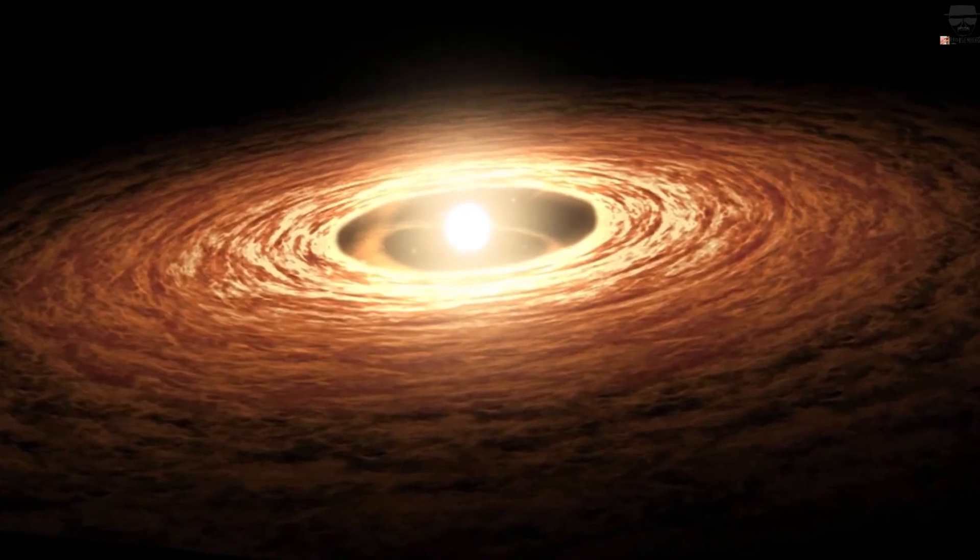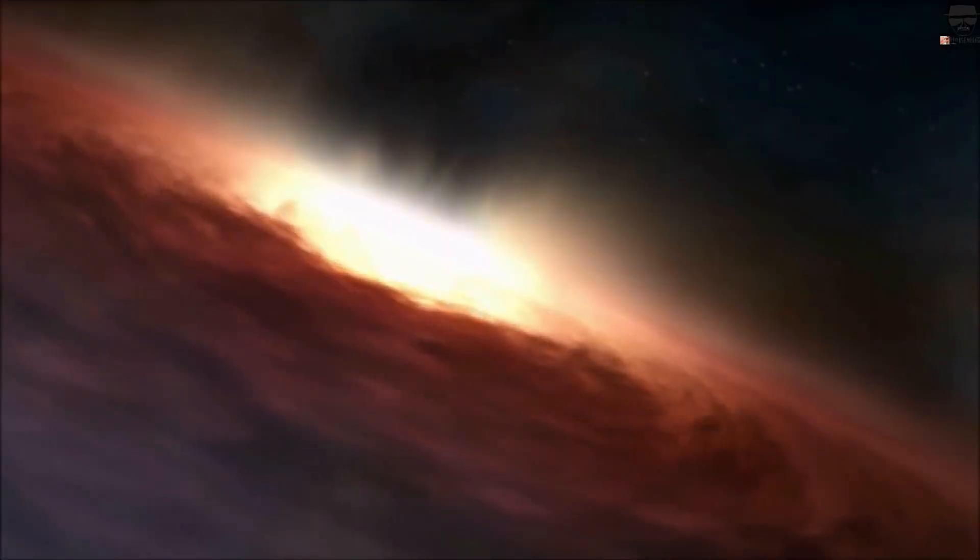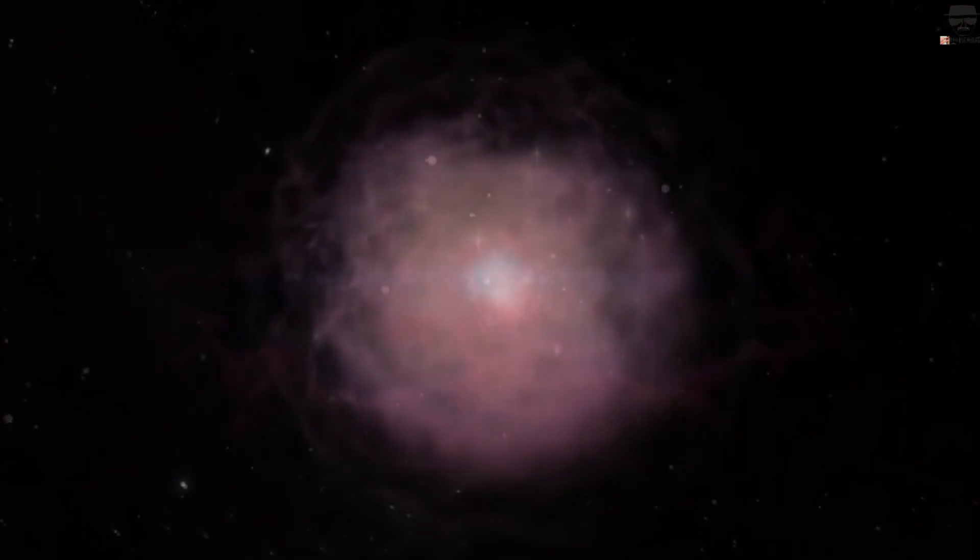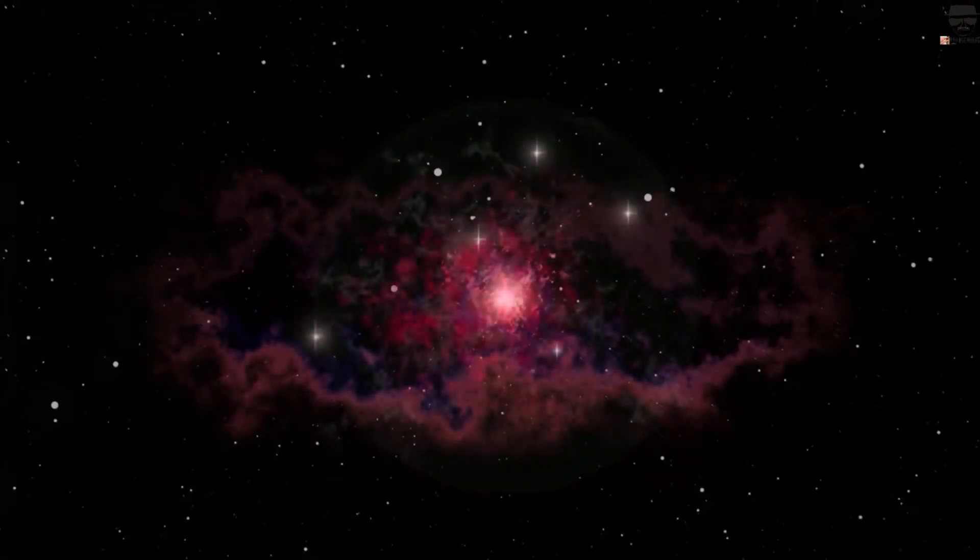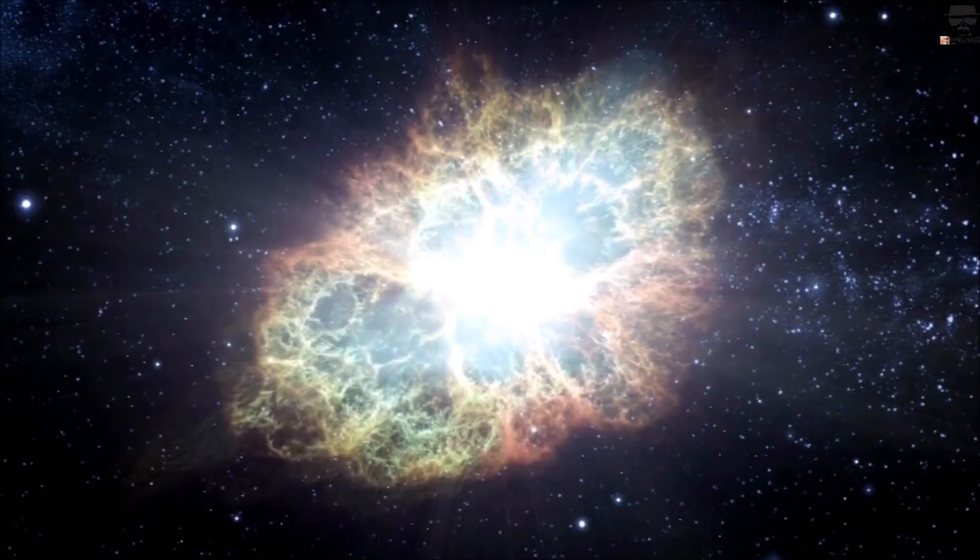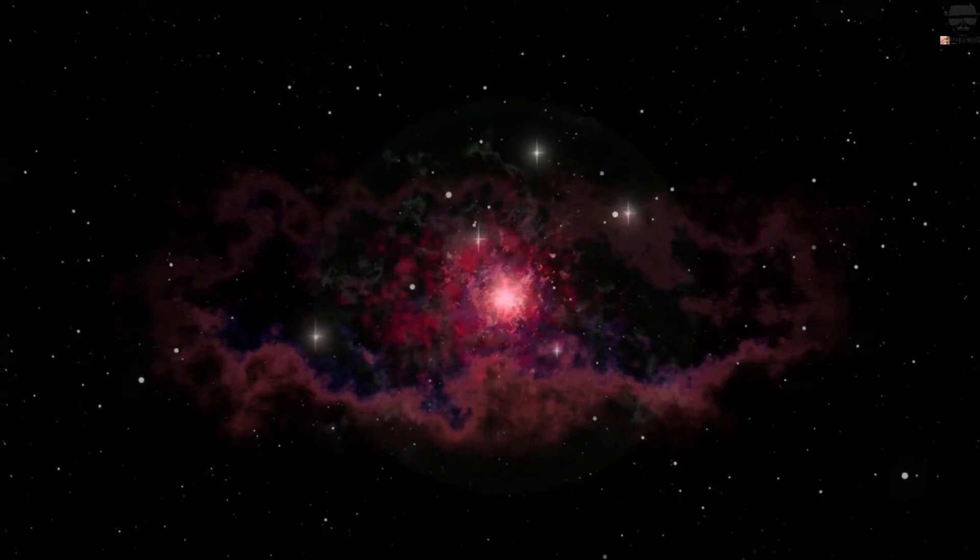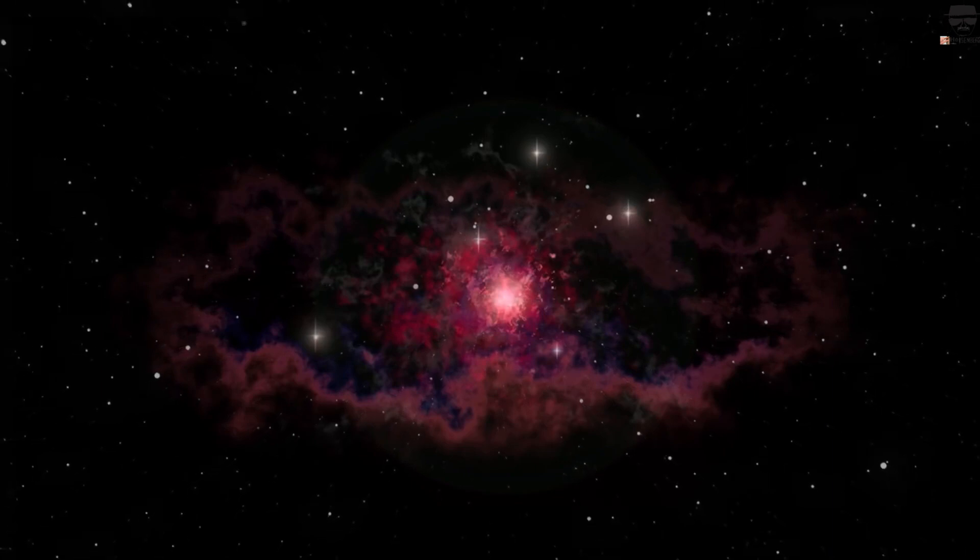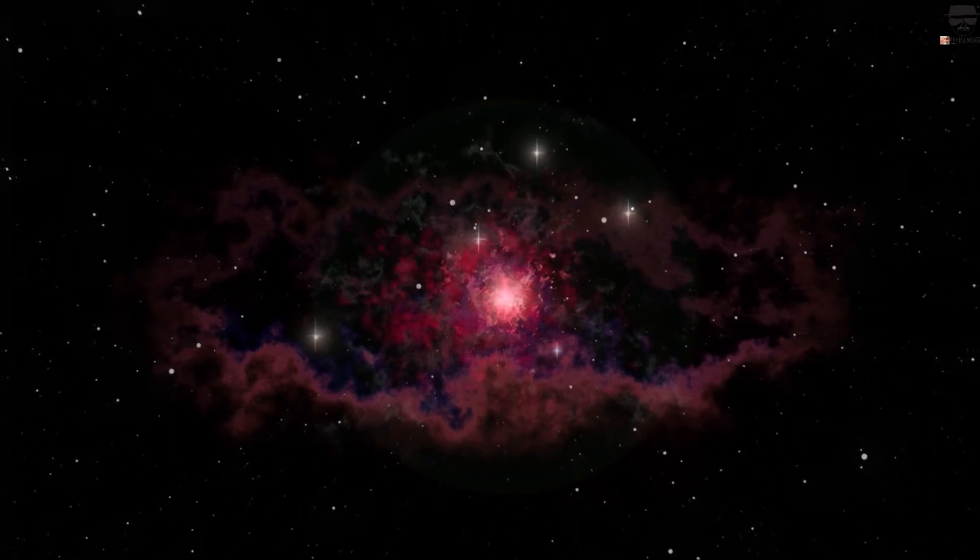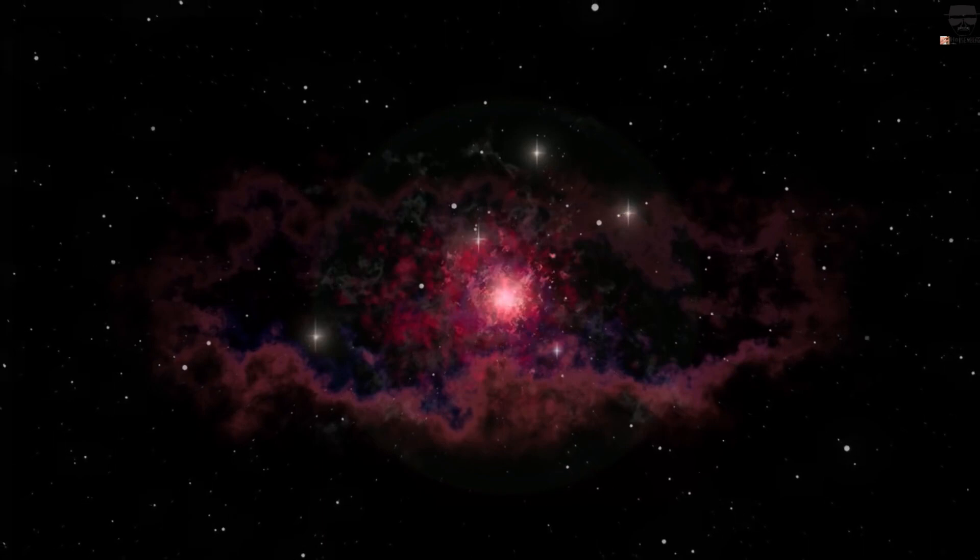As a type 2 supernova, Betelgeuse will remain bright for a very long time. Although there are large variations within these classes of supernovae for exactly how bright they become and how bright they remain over long periods of time. The supernova, after reaching maximum brightness, will slowly begin to fade over the time span of about a month, becoming about as dim as a half moon after 30 days time.